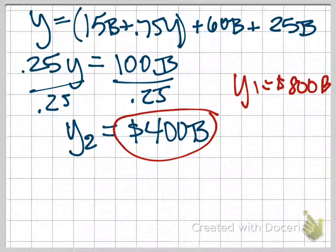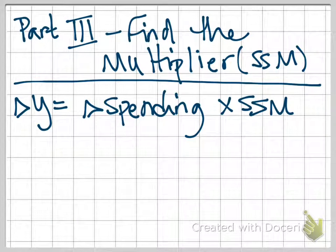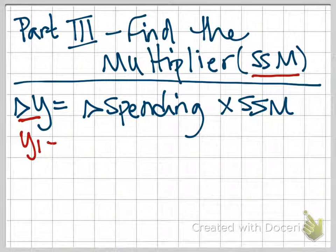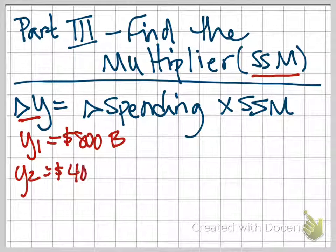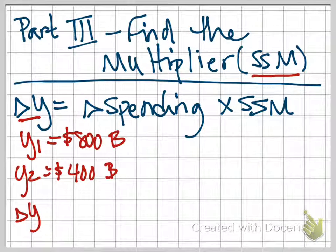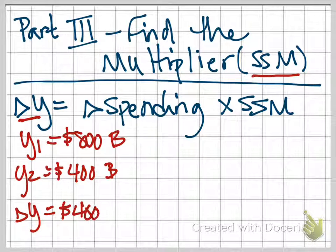We can use this information to calculate what their question is asking for in part three. In part three, they ask us to find the multiplier, in my abbreviations this is the SSM, Simple Spending Multiplier. If you recall from earlier content, if you watched some of my other videos in this module, we would say that the change, delta Y, the change in real GDP demanded, is equal to some change in spending times the multiplier. We saw that Y1 was originally $800 billion. Our new equilibrium, Y2, is only $400 billion. And so the change in Y here is equal to $400 billion.